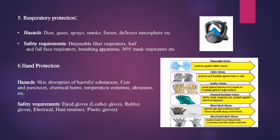Number six is hand protection. Hazards include skin absorption of harmful substances, cuts and punctures, chemical burns, temperature extremes, and abrasion. Safety requirements include hand gloves, leather gloves, rubber gloves, electrical and heat-resistant plastic gloves, side-patched gloves, disposable gloves, fabric gloves, chemical-resistant gloves, metal mesh gloves, and aluminized fabric gloves.